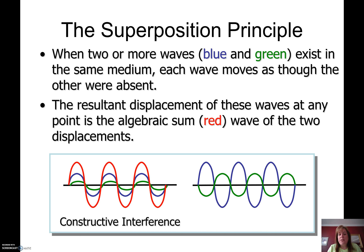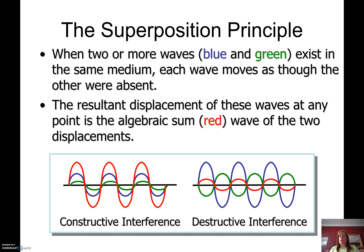Whereas I could have destructive interference — if I have waves that are off by half a wavelength, then when I do an algebraic sum of those, we're going to have some canceling out of that amplitude, so the amplitude of the waves gets smaller, and that's called destructive interference. The superposition principle says that when two or more waves are in the same space, the medium is an algebraic sum of those two waves — it can be constructive, giving higher amplitude, or destructive, giving lower amplitude.